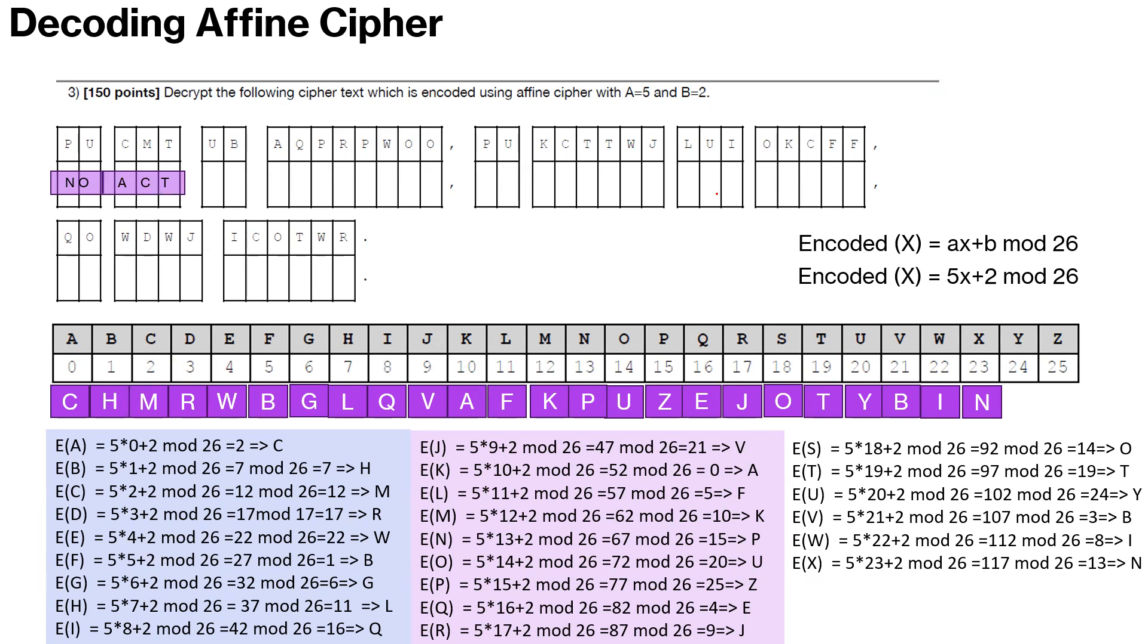So this becomes ACT. Similarly U is O, and B is F, so UB is OF. A is K, Q is I.